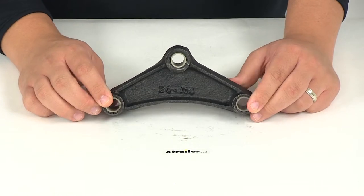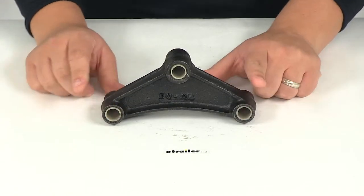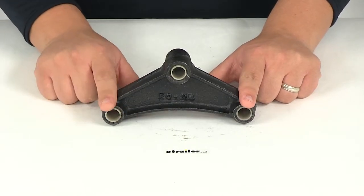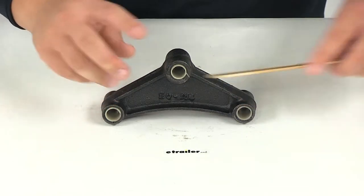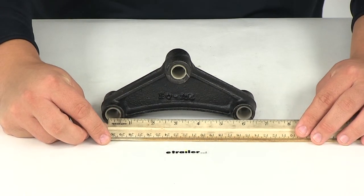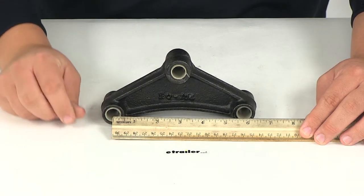A couple other measurements to keep in mind. We're going to take a measurement from the center of this hole to the center of this hole. Measuring center on center, that gives us a separation of five and three quarters of an inch.